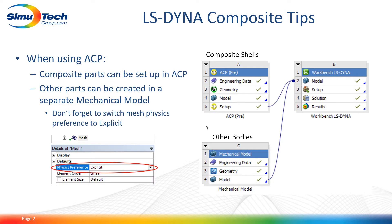Some other things to note when using composites: if you're using ANSYS Composite PrepPost (ACP), the composite parts can be set up in ACP and then you'll just need to set up your other bodies in a Mechanical model. We have our composite shells created here, our other bodies created here, and then we'll drag the setup cell from ACP onto the model cell of a Workbench LS Dyna analysis system,